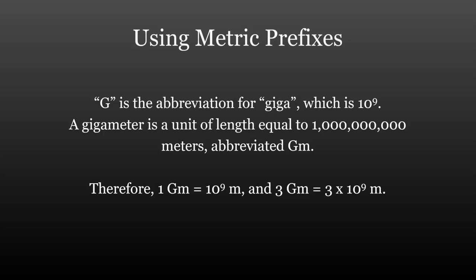Each metric prefix can be added to each metric base unit, so there's a lot of combinations that we can have. For example, a capital G signifies the prefix GIGA, which is equivalent to 10 to the ninth power or a one followed by nine zeros.